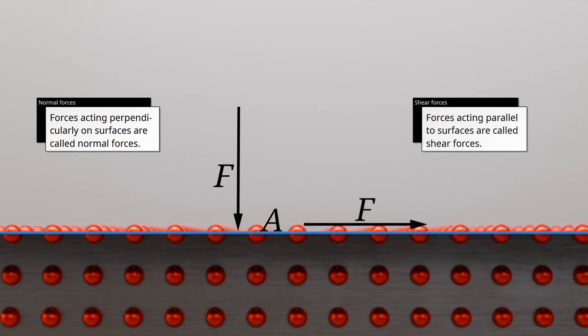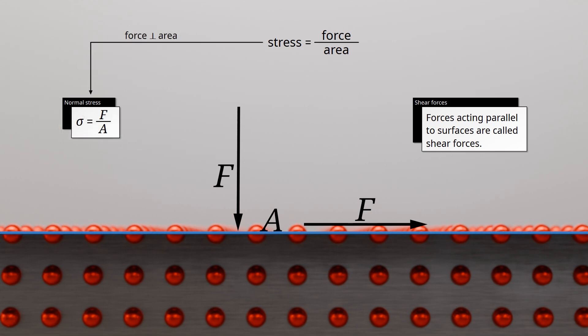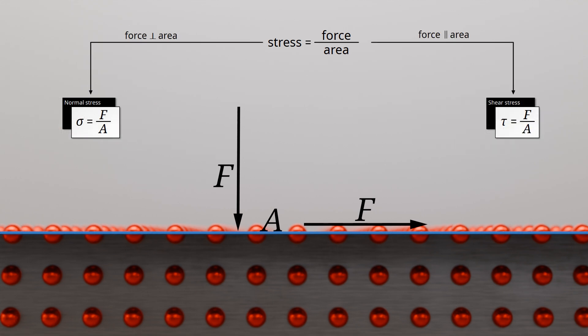Whether a shear force is capable of causing an atomic plane to slide does not depend on the force alone — the size of the atomic plane to be sheared is also decisive. The larger the surface area of the atomic layer, the more bonding points there are between two atomic planes that have to be broken in order to slide. So it depends on the force per surface area. Such area-related forces are called stresses: normal stresses are denoted by the Greek letter sigma, while shear stresses are given the Greek letter tau. Both types of stress are defined identically as force per unit area.